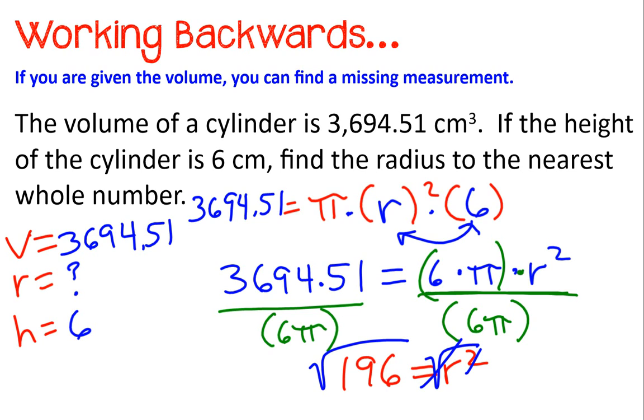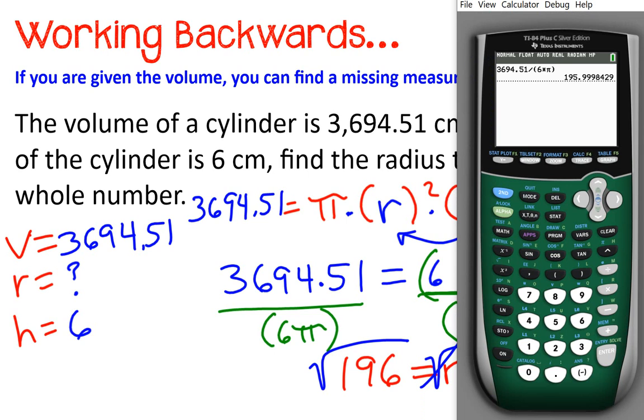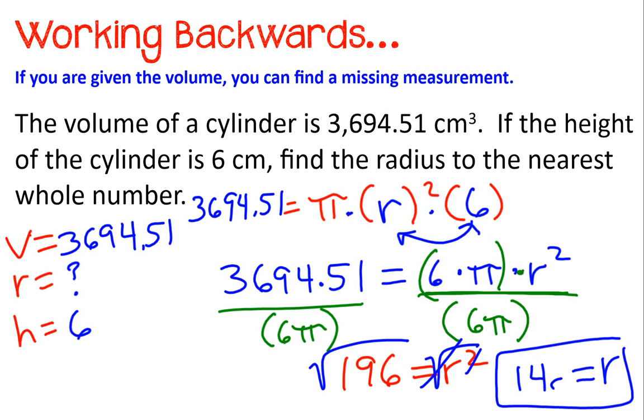And once we take the square root of 196, then we will have just the radius. And you may know the square root of 196, you may not. But on your calculator, the square root sign is above the square sign. So I'm going to type square root 196. And there we have it. The radius is 14 centimeters. That wasn't so bad.